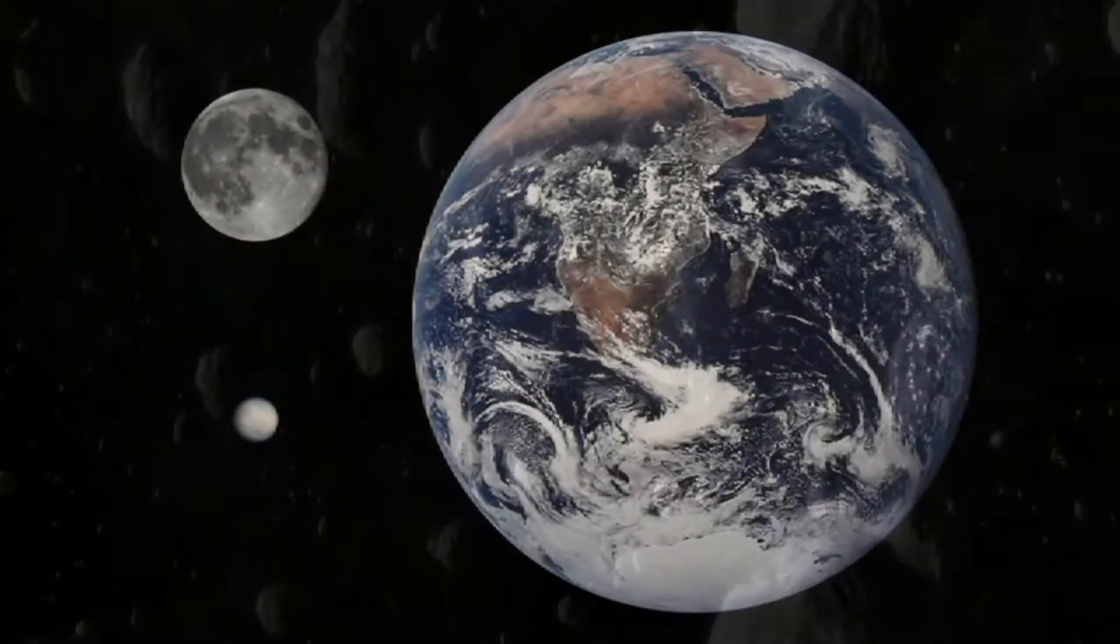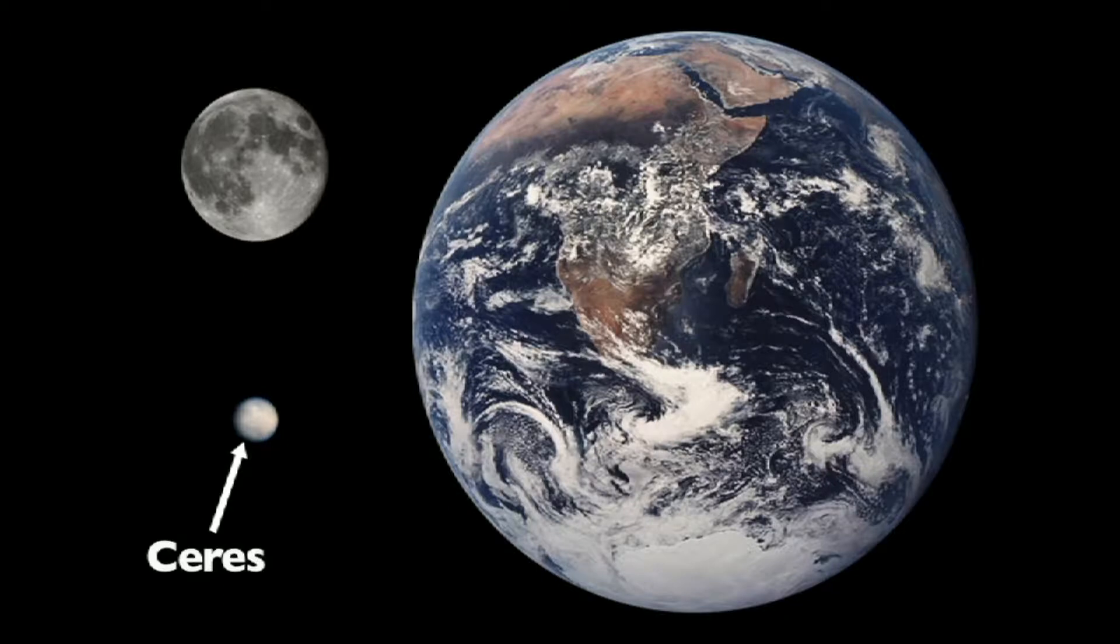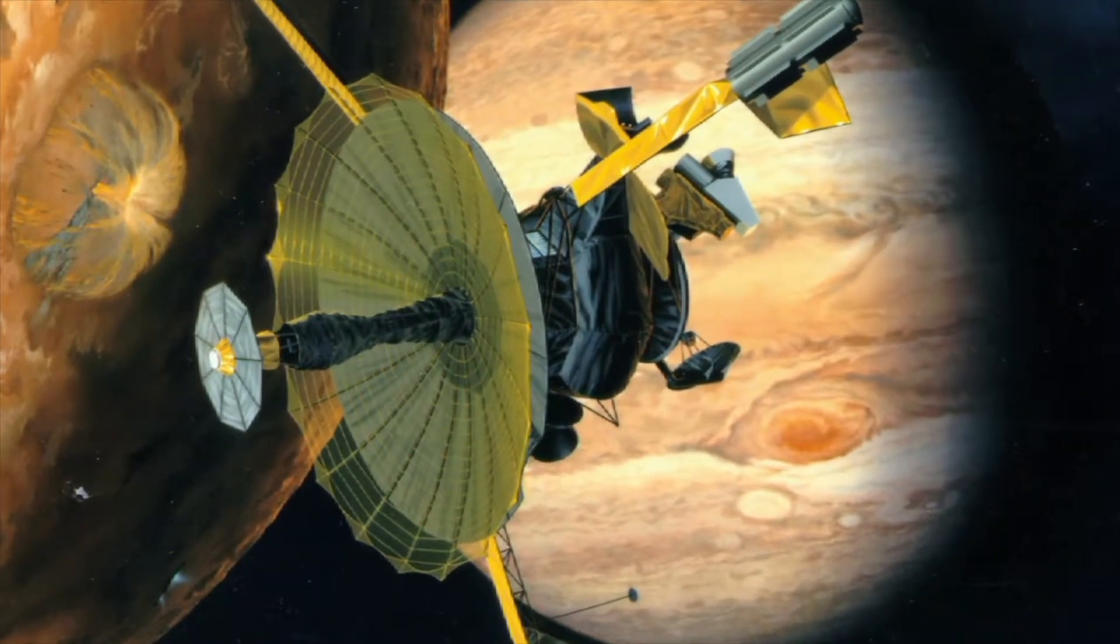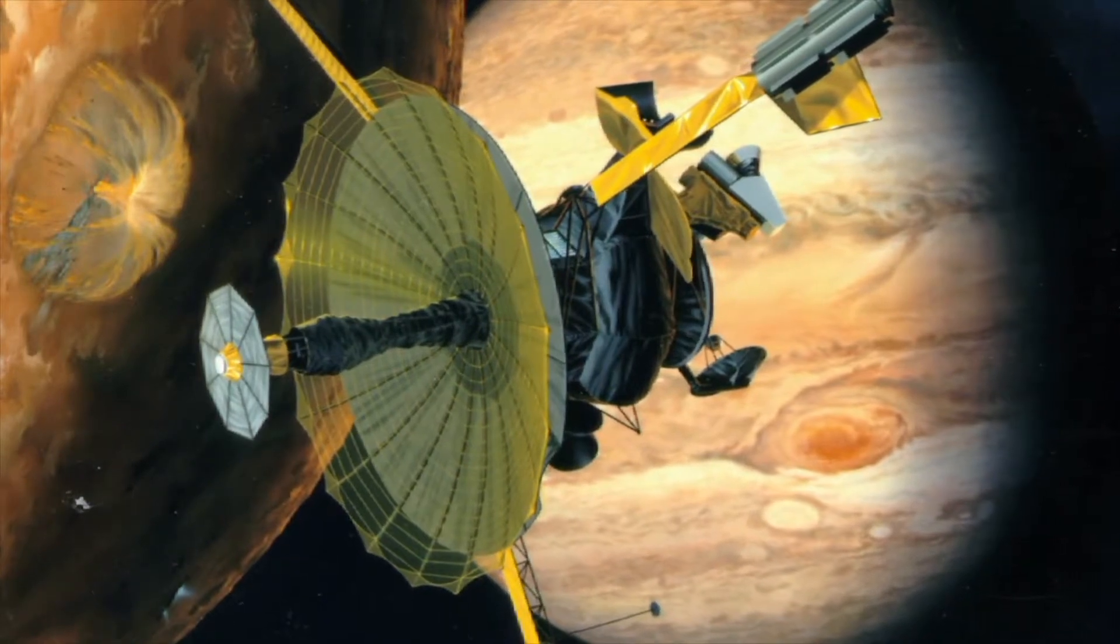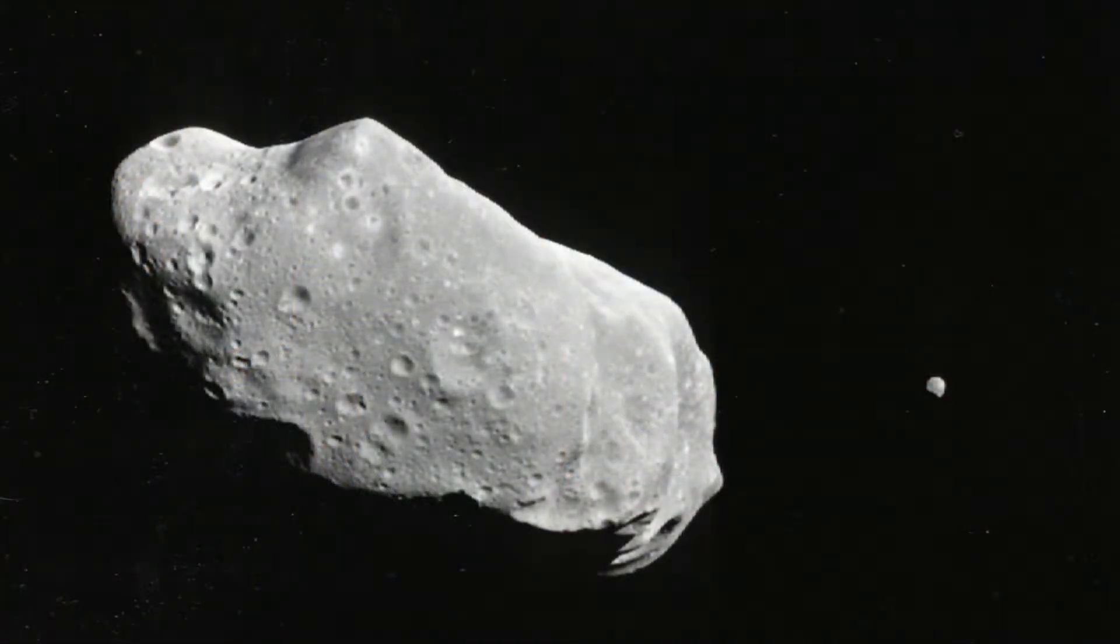An asteroid called Ceres is one quarter the size of our moon. The spacecraft Galileo first discovered in 1993 that an asteroid called 243 Ida had its own moon.